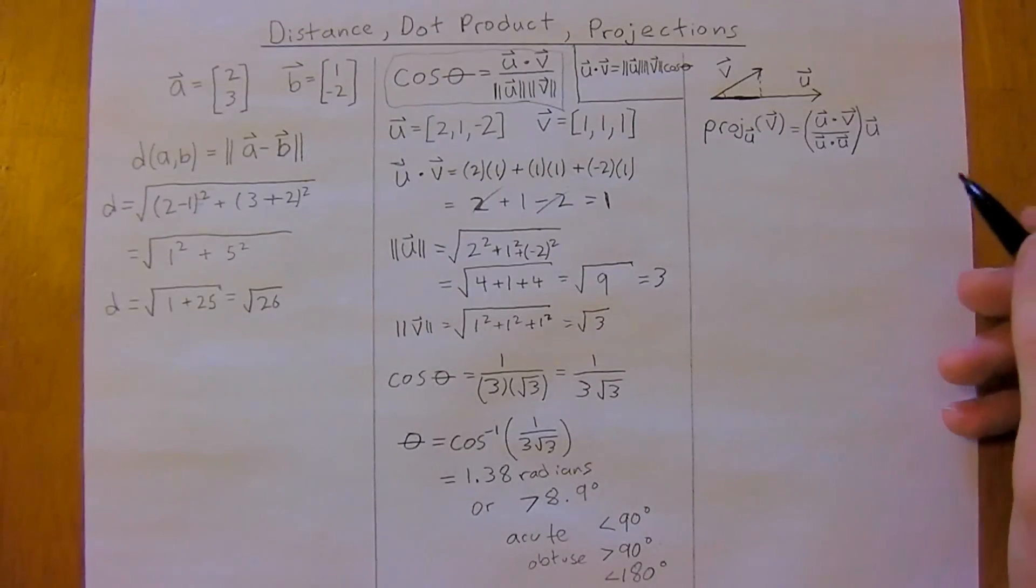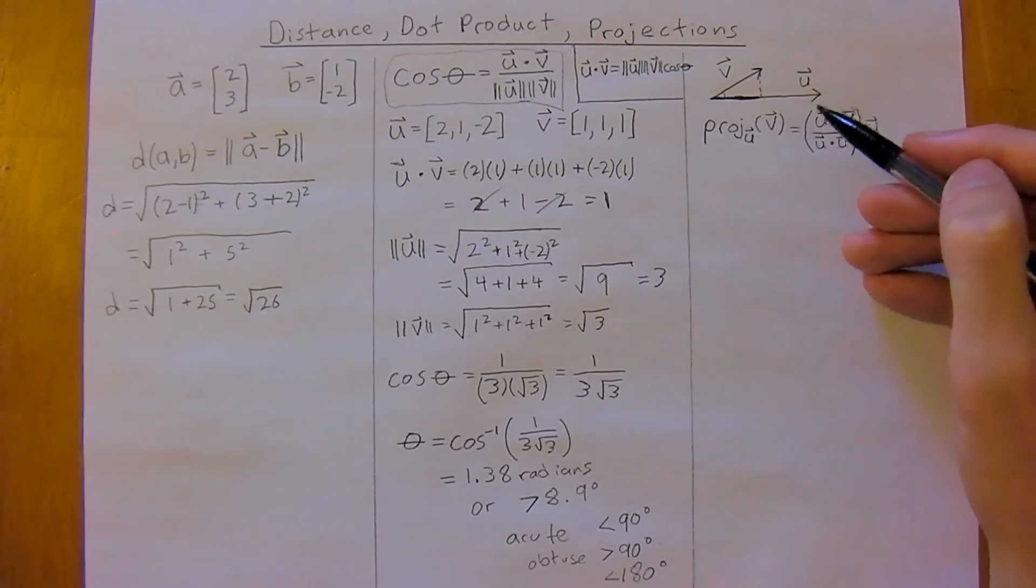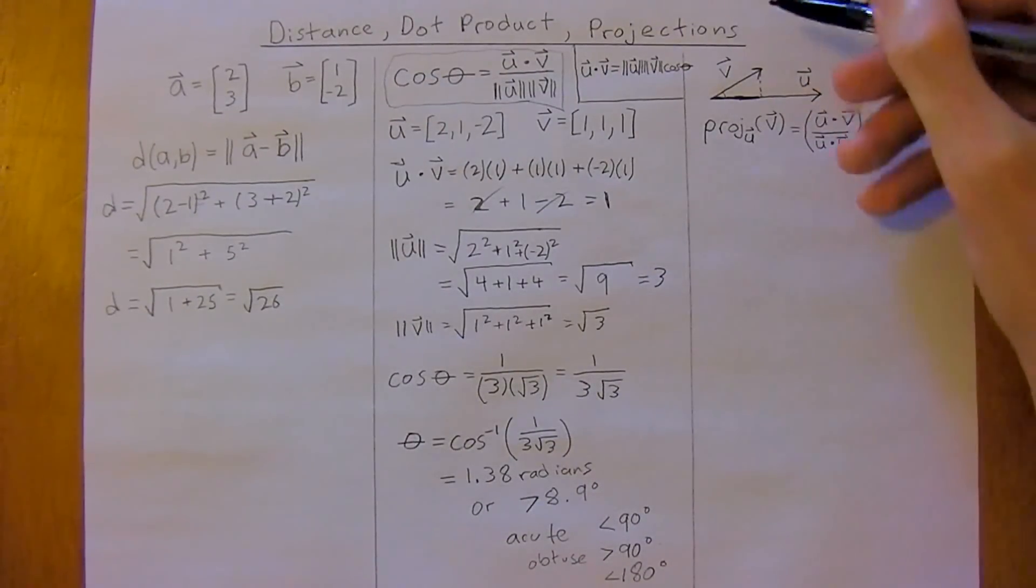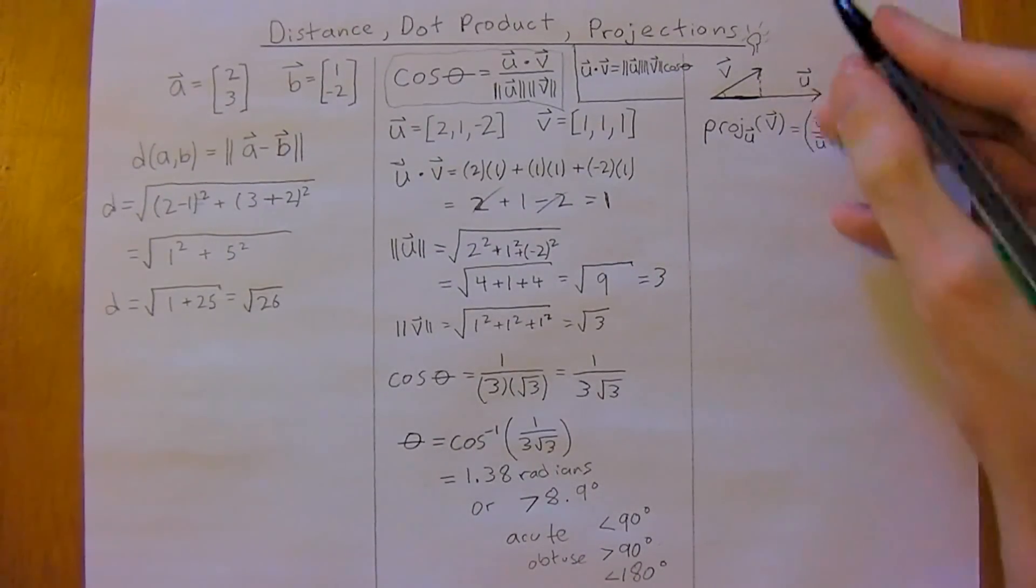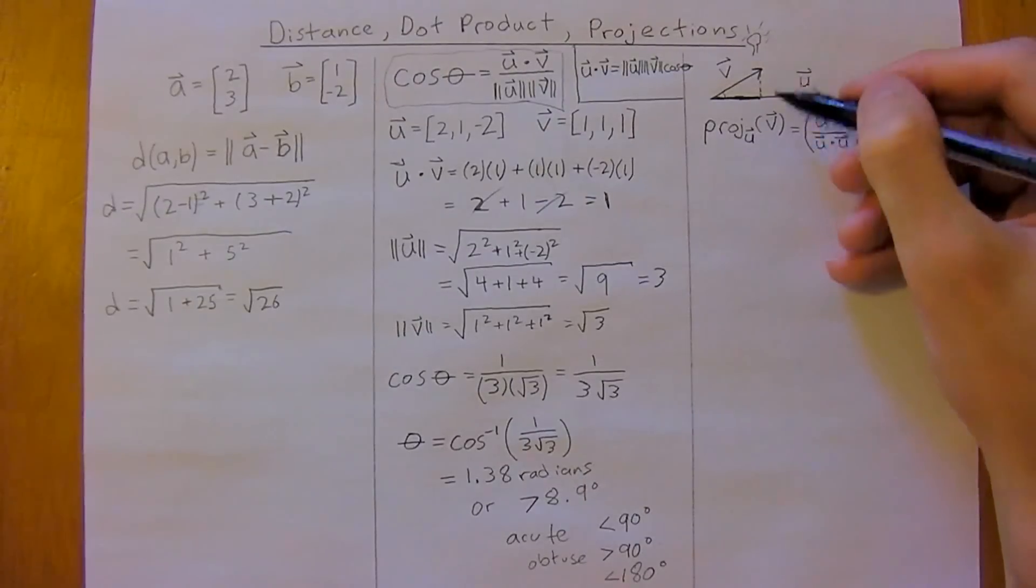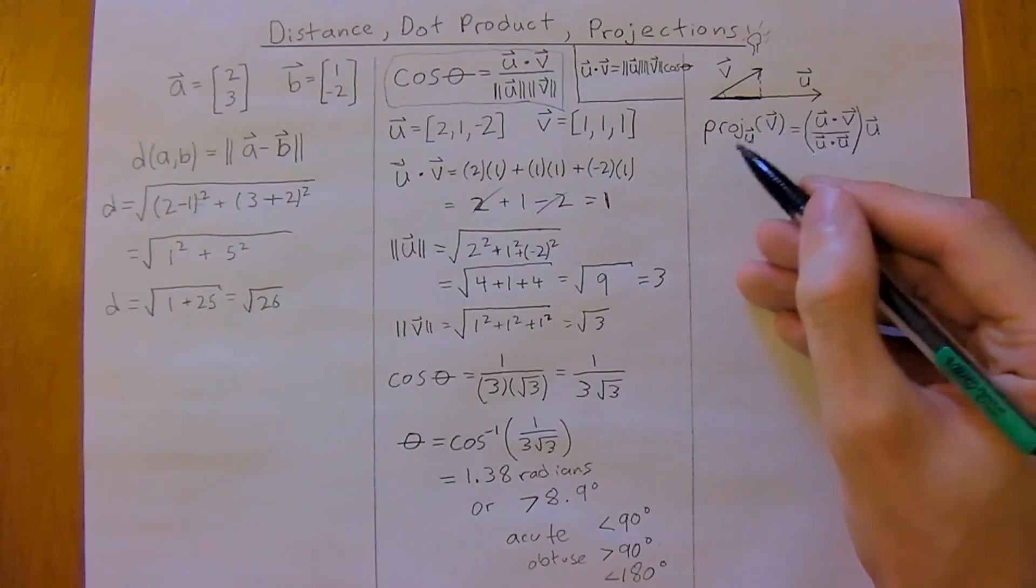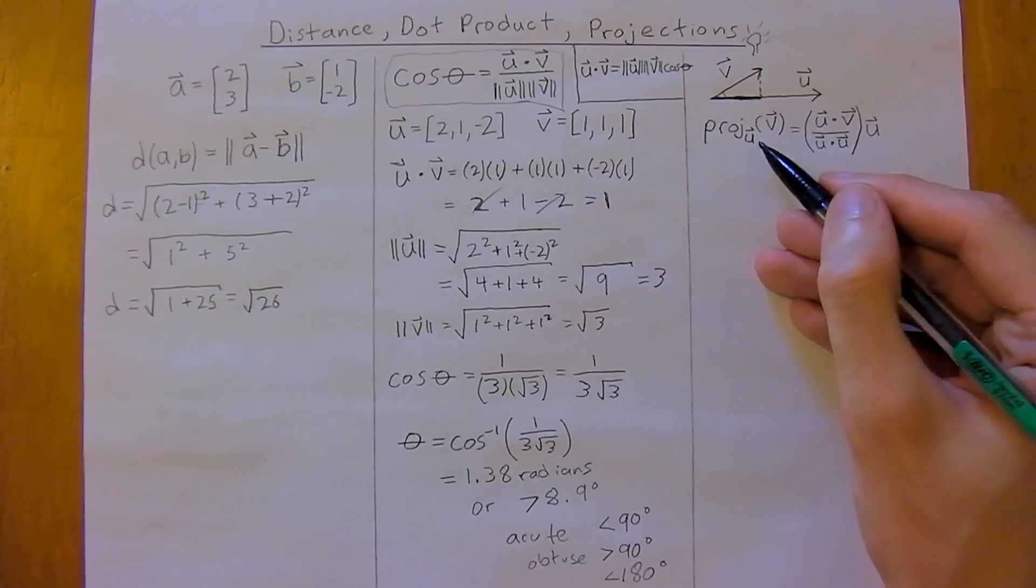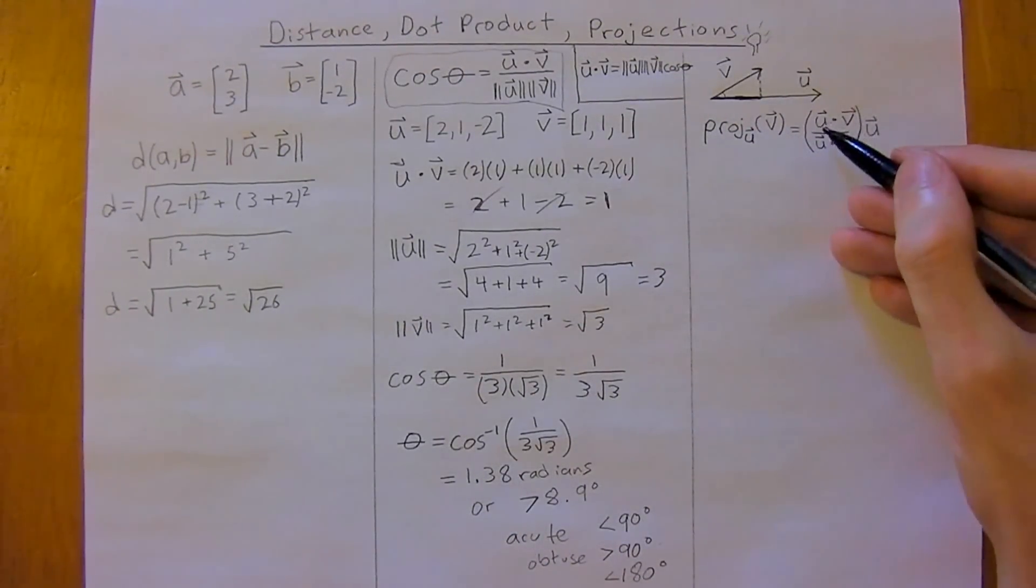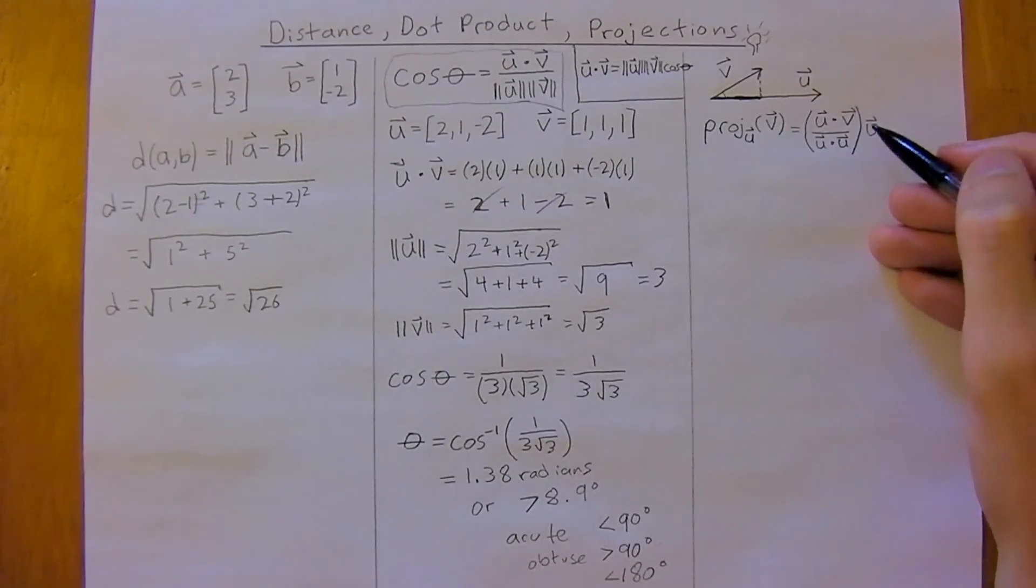So now for projections, and this is actually one of the easiest, so if you think of vector V and vector U, and a projection is really just, if you were to shine a light, a light, and it was to cast a shadow down on vector U, you'd get your projection of V onto U. And in mathematical terms, this is how we describe it, so this means the projection of vector V onto vector U, and that's equal to vector U dot product vector V divided by vector U dot product vector U, and all of that times multiplied by vector U.